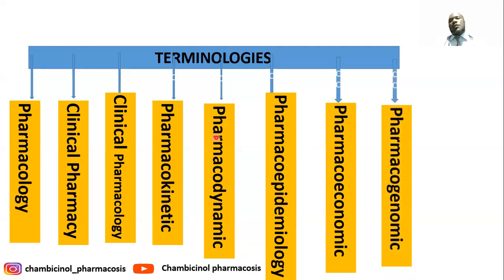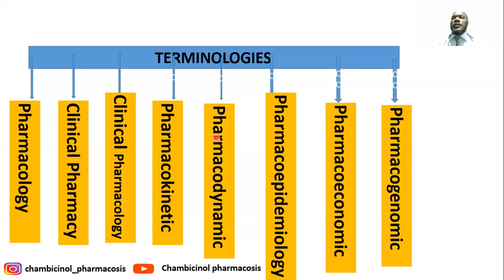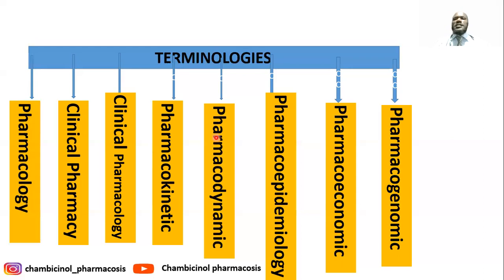We also have pharmacogenomics. Pharmacogenomics is the branch of genetics which deals with determining the likely response of an individual to a drug. Different individuals respond differently to the same drug, mainly because of their different genetic makeup.